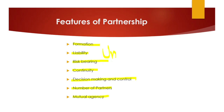The next feature is mutual agency. As we saw in the definition, the business is agreed upon by all and carried on by all or one of them acting for all. There is a mutual relationship between the partners where they have agreed to carry on this business together. These are the features of our partnership form of organization.